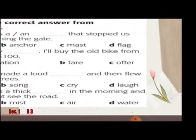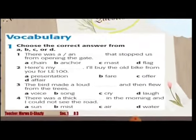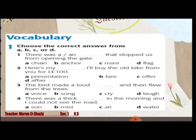Vocabulary. Choose the correct answer from A, B, C, or D. One: There was a/an ___ that stopped us from opening the gate. A: chain, B: anchor, C: mast, D: flag.